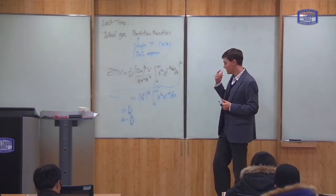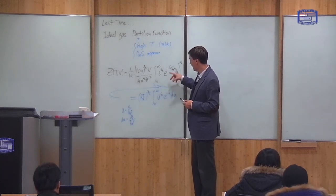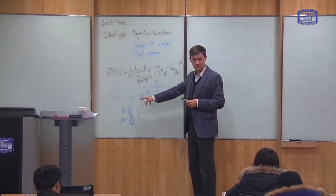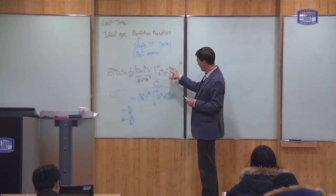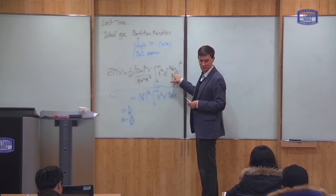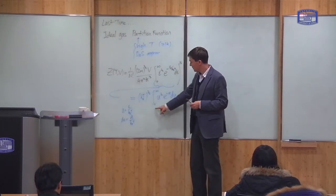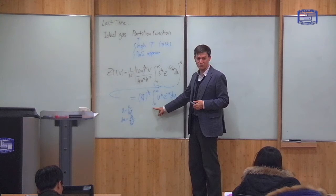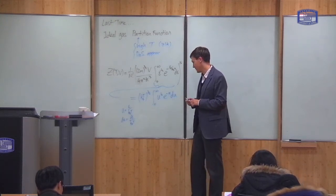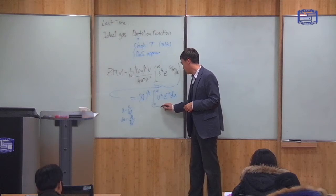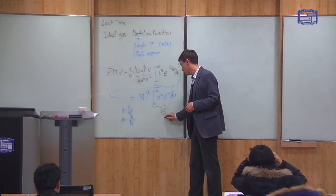This is important because we've now pulled the temperature dependence outside of the integral. Previously the integrand was a function of temperature, but now the temperature dependence is outside and the remaining integral is just a constant — a number we need to calculate. In fact, I will prove that this number turns out to be √π / 2.